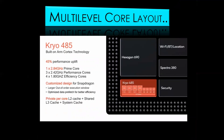Multi-level core layout. As you can see, we have Hexagon 690, Kryo 485, Wi-Fi, Bluetooth location, Spectra 380, and security. Kryo 485 is built on ARM Cortex technology. It has a 45% performance uplift and customized design for Snapdragon, which has a large out-of-order execution window and optimized data prefetch for better efficiency.